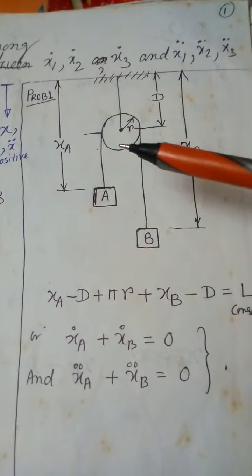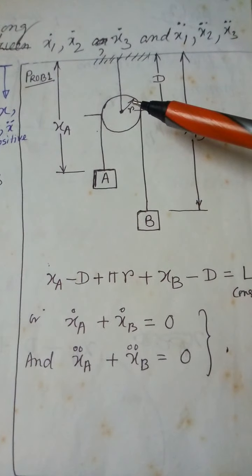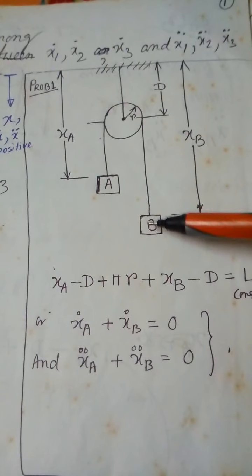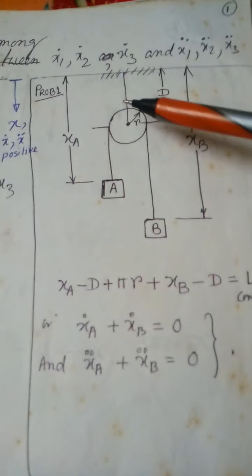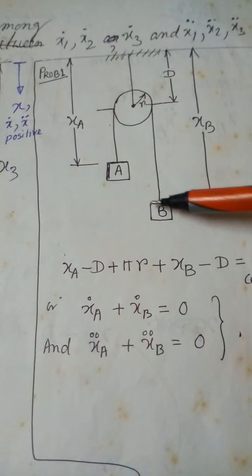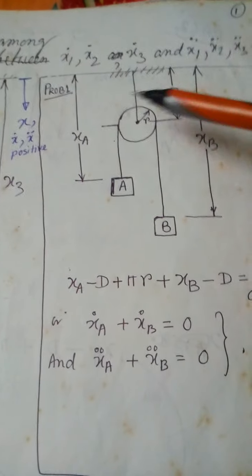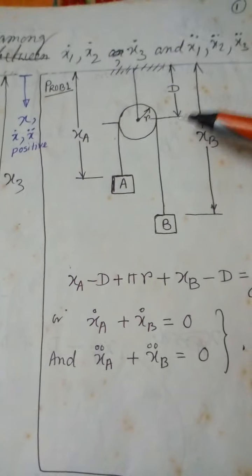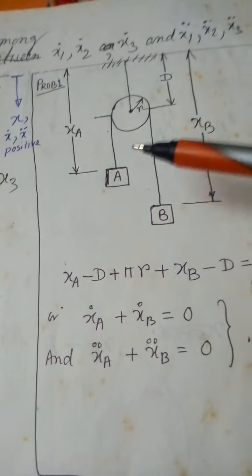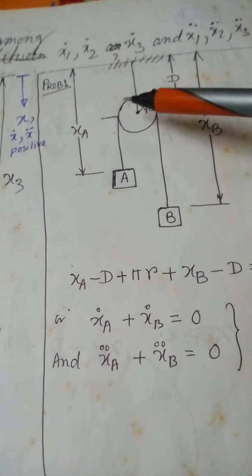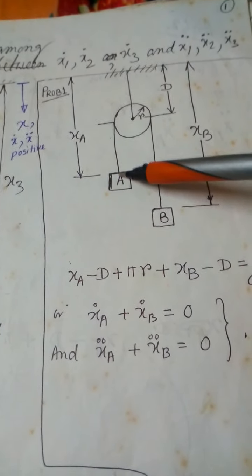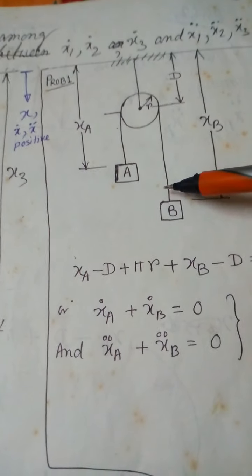This is a dependent motion problem. We have a pulley of radius r and two masses. We have to find the relation between the velocity of one mass with respect to the other, and also the acceleration. The string over the pulley is inextensible — it will not extend — so the length of the string is constant.